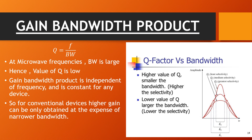The gain-bandwidth product. Basically, the gain-bandwidth product for an amplifier's performance is constant. If you want more gain, then your bandwidth will have to be reduced. And if you want less gain, you will need to increase bandwidth. If you want more gain, then your bandwidth will automatically be reduced. In the microwave frequency, our bandwidth is much higher, so it is obvious that we will get less gain.